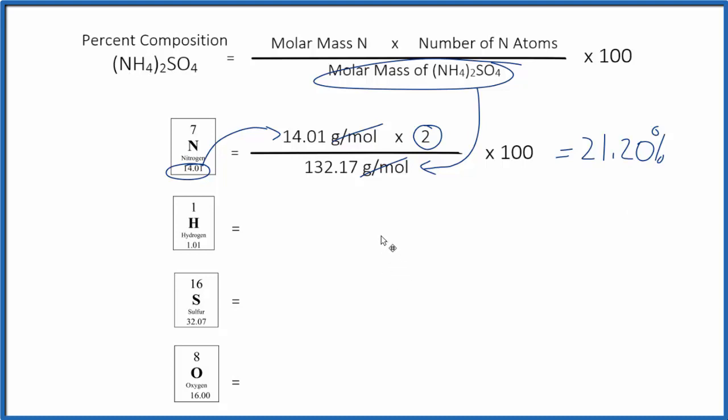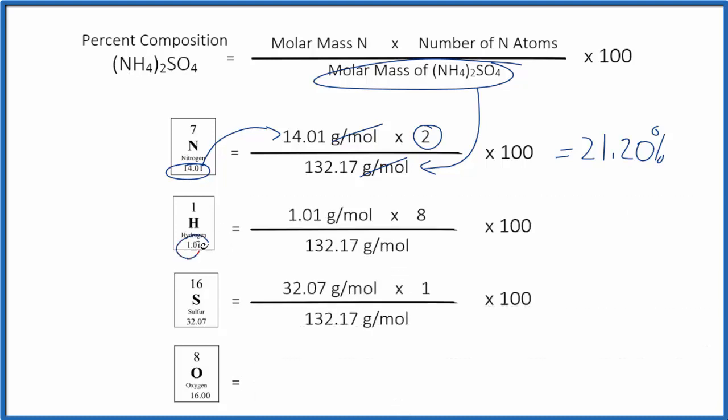Hydrogen and sulfur are done the same way. We have our atomic mass here, and then again here. Multiply by the number of atoms. Be careful. 2 times 4 gives us 8. So we do have 8 hydrogen atoms here. Do the multiplication, divide by the molar mass, multiply by 100. And we get 6.11% for the hydrogen. And then for the sulfur, we get 24.26%.